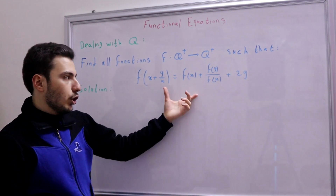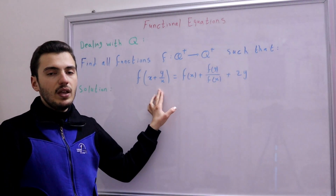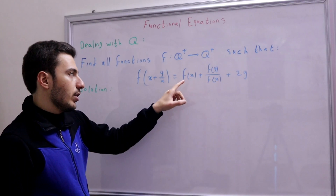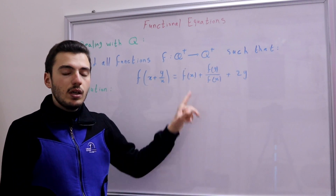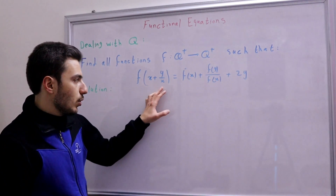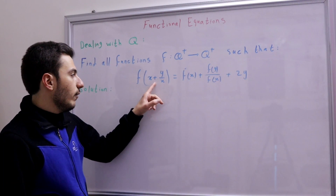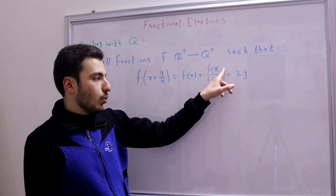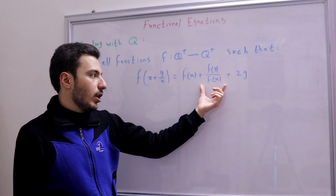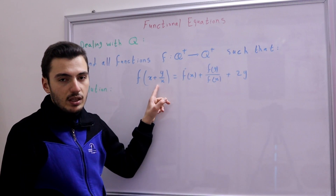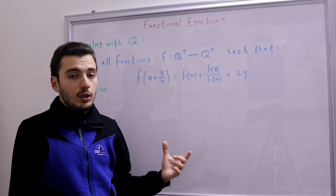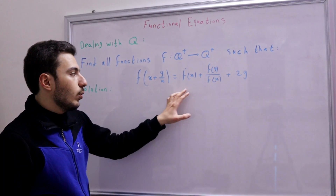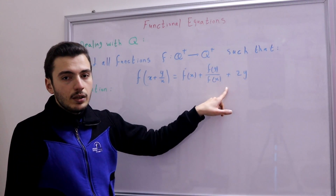What do we do first? As always with functional equations, we start substituting. Since we can only use positive rationals, it makes sense to start with one. If we substitute x=1 and y=1, we notice something nice: y/x becomes 1 and f(y)/f(x) also becomes 1. So substituting x=y=1 gives us f(2) = f(1) + 3.